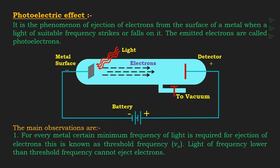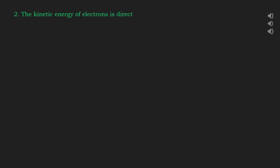The threshold frequency is different for different metals. Second observation: the kinetic energy of electrons is directly proportional to the frequency of the incident radiation and is independent of its intensity.